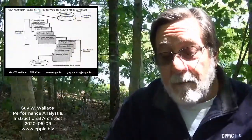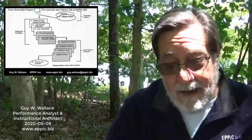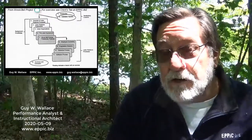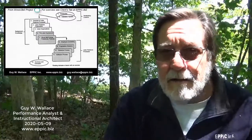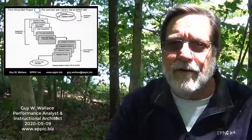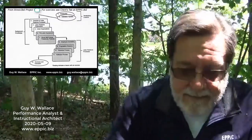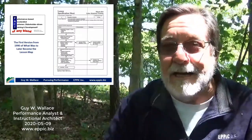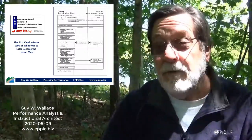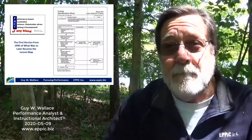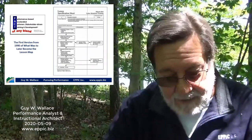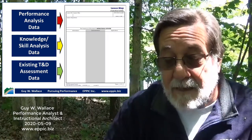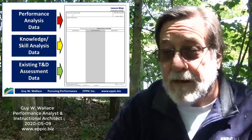Here's an example of an event map from that first Illinois Bell project on labor relations for supervisors. It identifies the flow — 12 chunks, with an open and a close, so 10 chunks of content in the flow. Clients can look at that and say, okay, that makes sense, but what's in that second or third bubble? That's where the next format comes in. This is the earlier format — the initial format that was later relabeled. The three-column approach is: information, demonstration, and application. The analysis data feeding us are performance analysis data, knowledge and skill data, and any existing training and development assessment data.